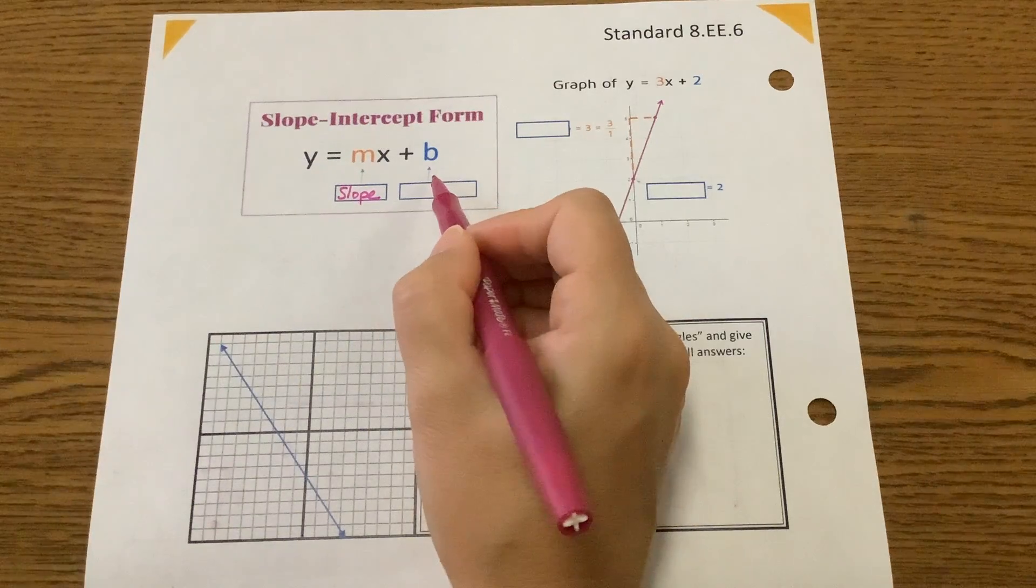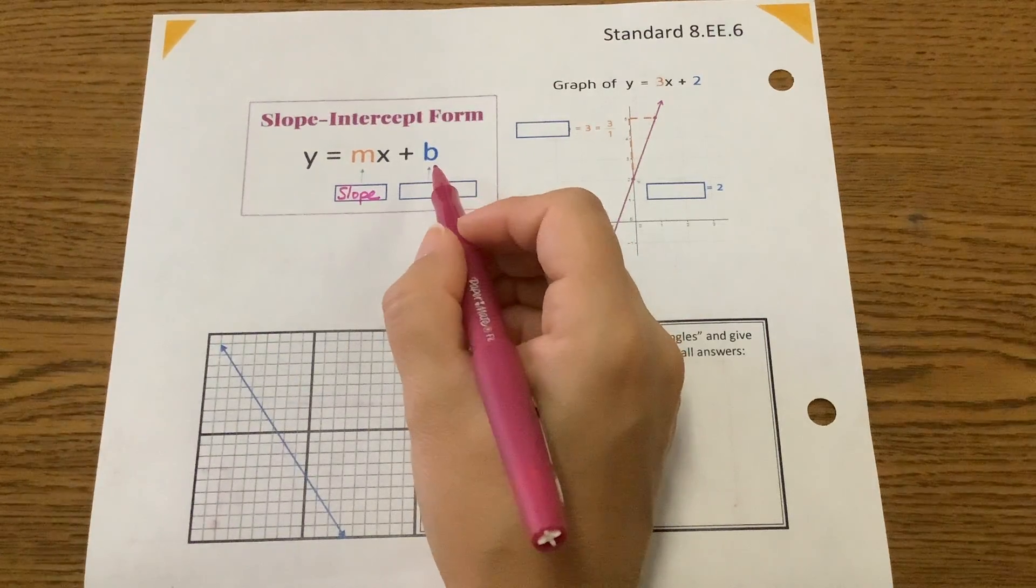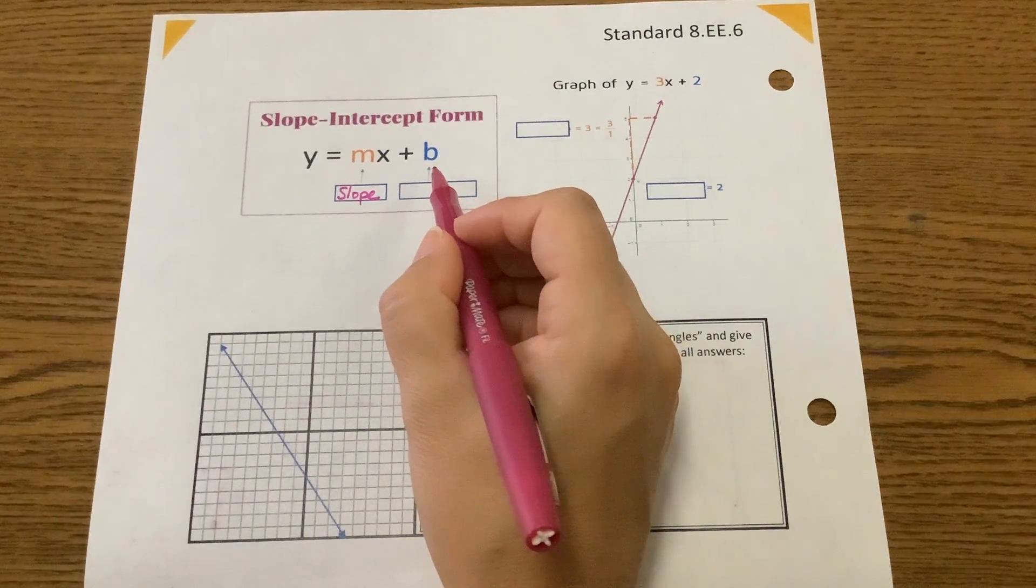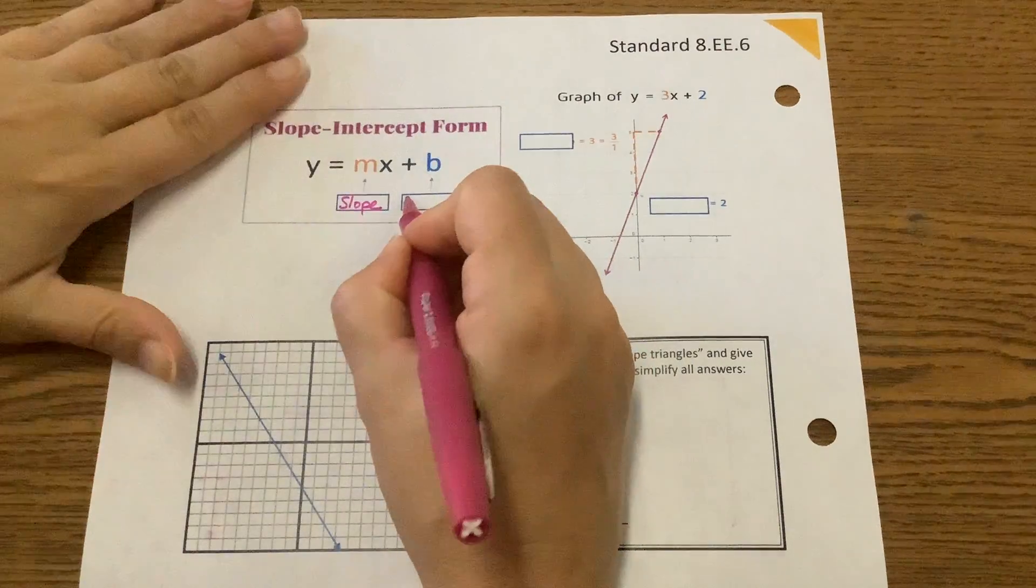B, there's no reason why we use the letter B, but B is representing what value? The y-intercept, good.